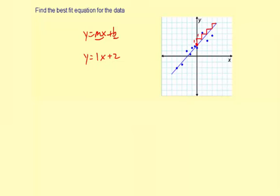So my equation is y equals one x plus two, but we don't write the one. We make it invisible, so our answer for the best fit equation is y equals x plus two. Just like that.